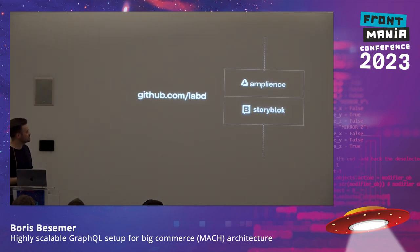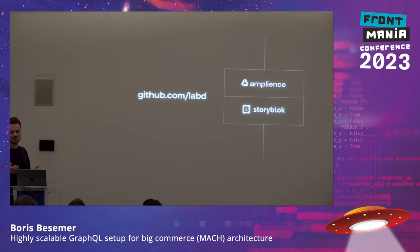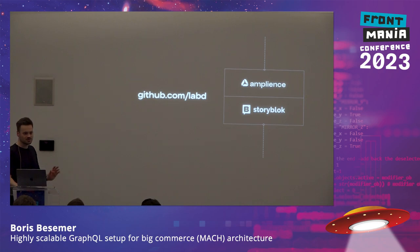We've already done this for multiple CMSs. We've got two examples: Amplience and Storyblok. If you're interested, at github.com/labd we've set up GraphQL code gen plugins for Amplience and for Storyblok, Terraform providers to push it to the CMS, and even API clients for Golang if you want to do more specific things. All the tools are available if you want to use any of these CMSs, and it's all open source — so no worries about licensing.